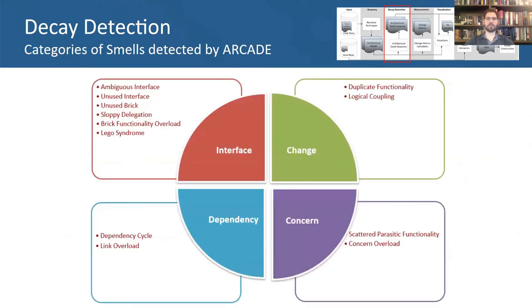Arcade focuses on the detection of architectural smells and is able to detect 12 different types across four categories: interface, change, dependency, and concern-based smells.